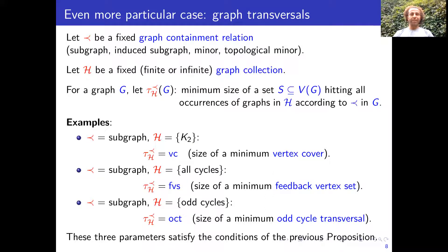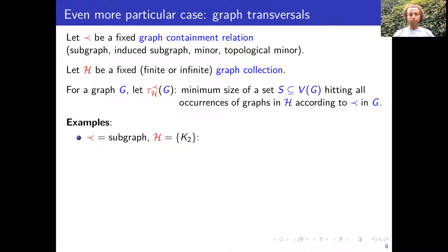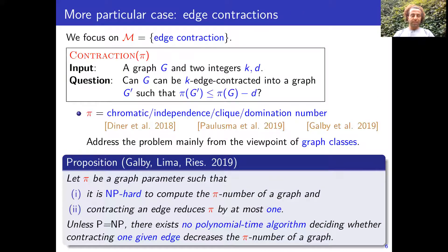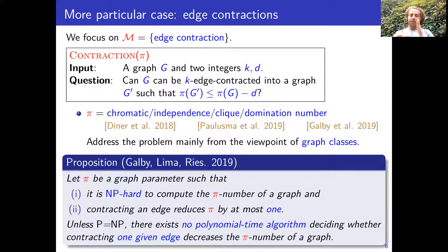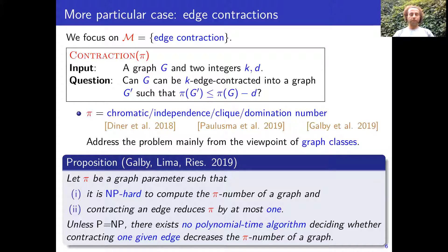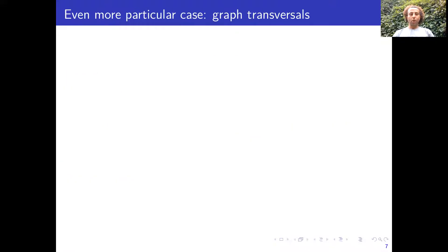It is easy to check that these three parameters satisfy the conditions of the previous theorem: contraction of an edge can decrease each of these three parameters by at most one, and also they are NP-hard in general graphs. By the previous result, even if we are given an edge, deciding whether its contraction drops the vertex cover, feedback vertex set, or odd cycle transversal number by at least one is NP-hard.